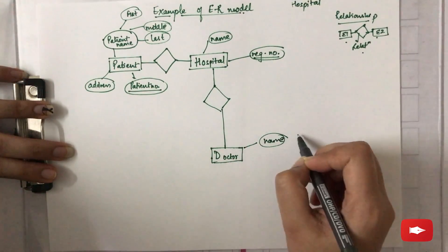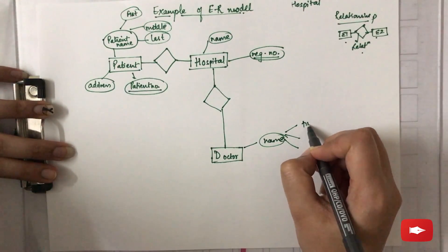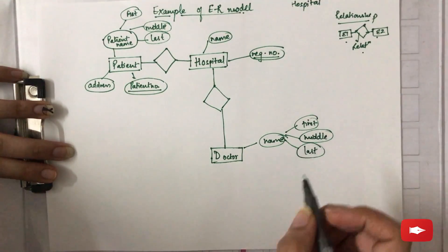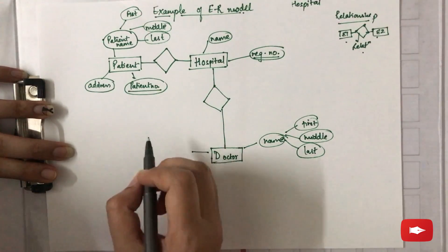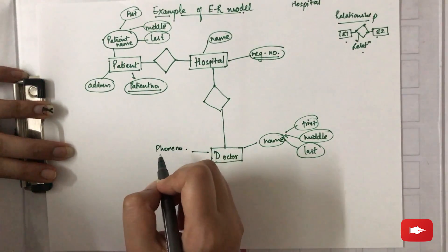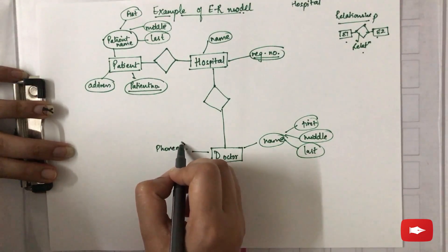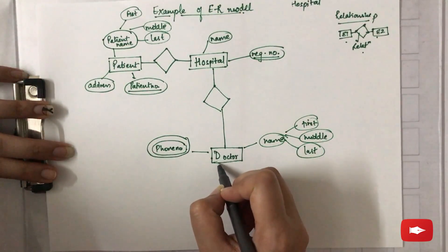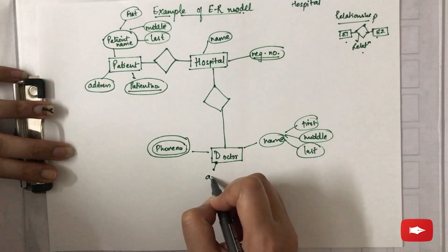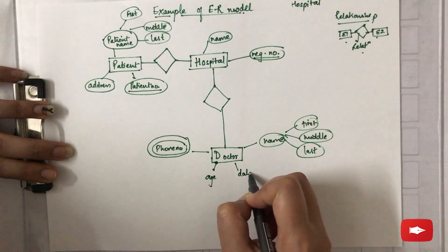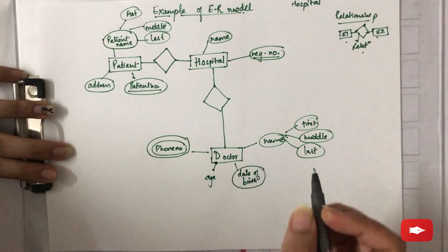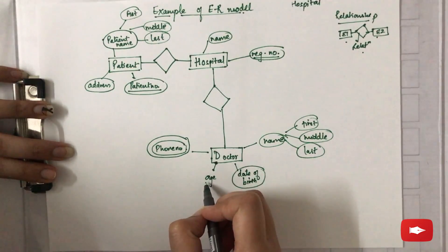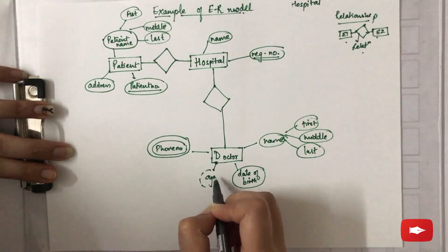The doctor entity can also have a name, which further has first, middle, and last name — acting as a composite attribute. Doctor can also have a phone number, which is a multi-valued attribute, represented by a double-lined oval. Doctor can also have date of birth, and age is an attribute derived from date of birth, so it acts as a derived attribute represented using dotted lines.